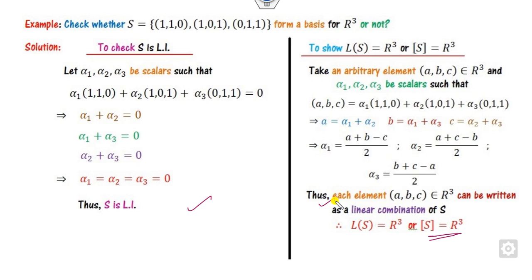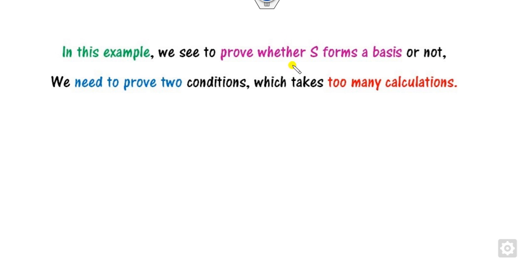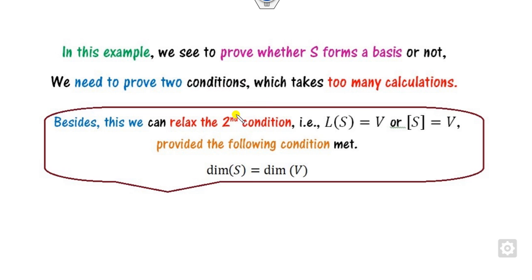Since you are able to find alpha 1, alpha 2, alpha 3, it means it is a span. Both properties are satisfied, so this is a basis. But this is the first method, which is quite lengthy because you have to satisfy these two conditions — it takes a lot of calculation. In order to make calculation easier, we can relax the second condition provided a certain property is satisfied.